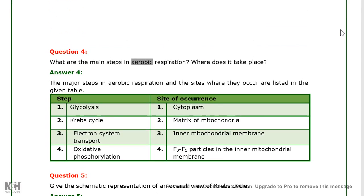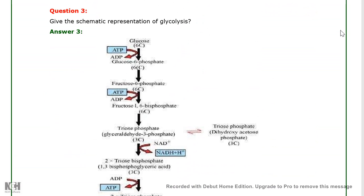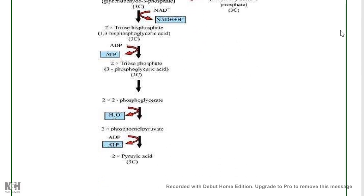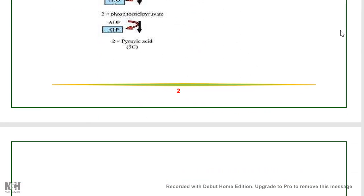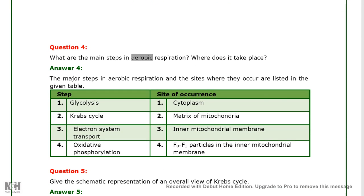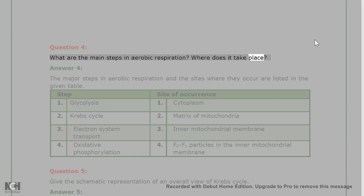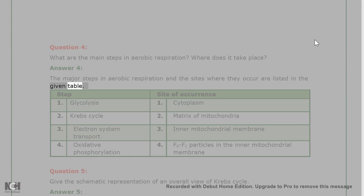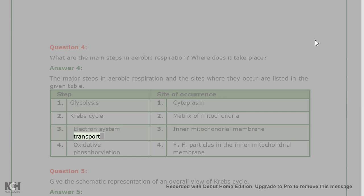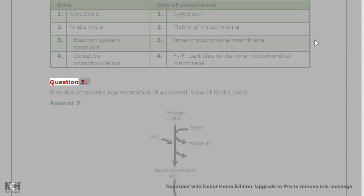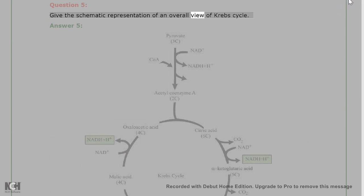Question 4: What are the main steps in aerobic respiration and the sites where they occur? Answer 4: The major steps in aerobic respiration and their sites are: (1) Glycolysis – cytoplasm; (2) Krebs cycle – matrix of mitochondria; (3) Electron transport system – inner mitochondrial membrane; (4) Oxidative phosphorylation – F0F1 particles in the inner mitochondrial membrane.